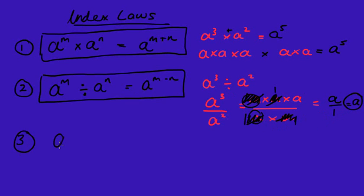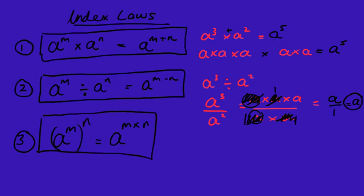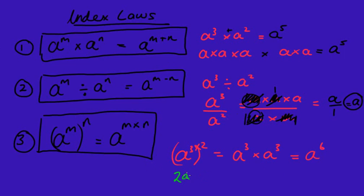Rule number three is probably among the most common three rules: a to the power of m, brackets all to the power of n. We multiply the indices together — I call it the one-inside, one-outside-the-brackets rule. An example: a cubed all squared means we multiply it by itself, giving a to the power of 6. Just be careful — a question like 2a cubed all squared means the power of 2 works on both the 2 and the a cubed, so it becomes 2 squared which is 4, times a to the power of 6.